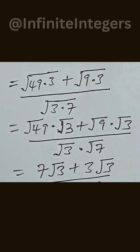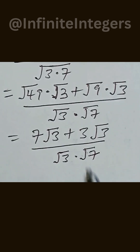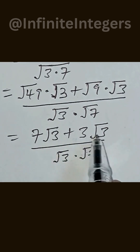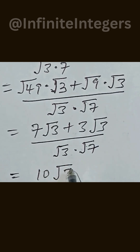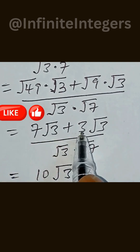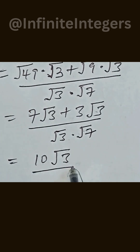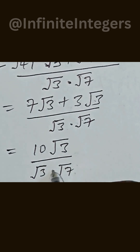Multiplied by square root of 7. In the numerator we have the same radical as their coefficient, so we add them together: 7 plus 3 gives us 10. So we write 10 square root of 3, all over the denominator, which is square root of 3 multiplied by square root of 7.